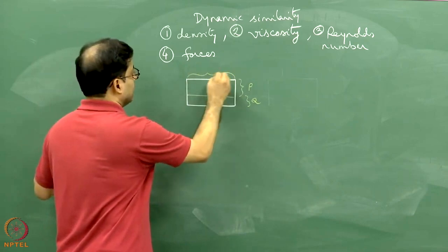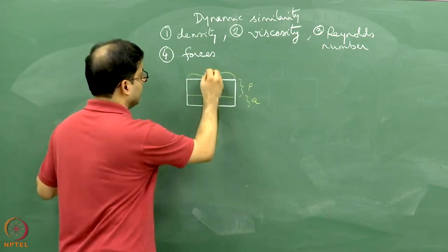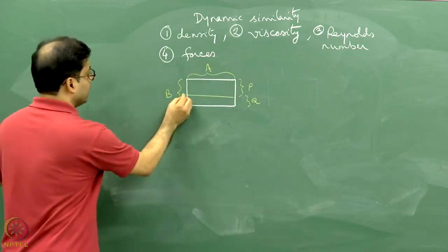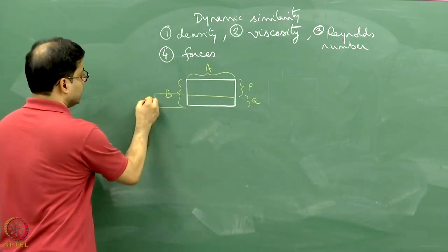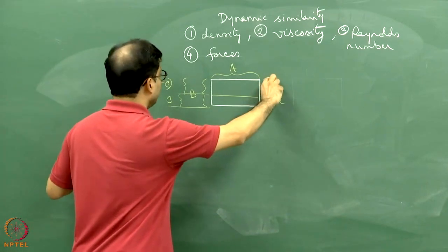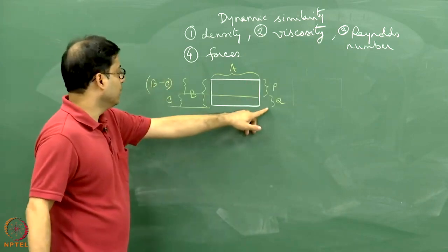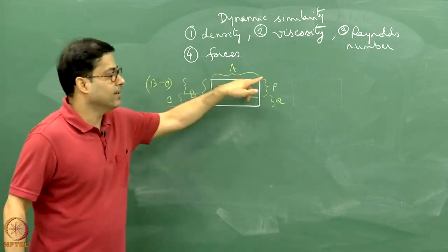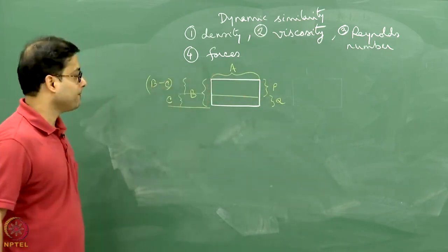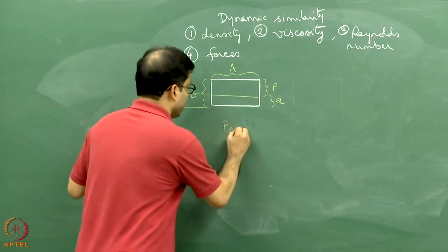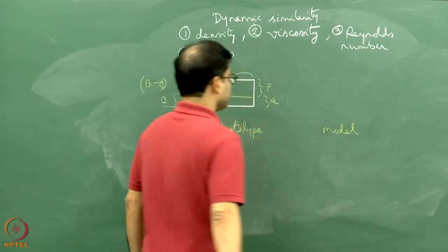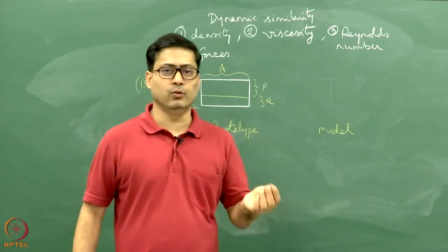There can be two or more layers. Let us say this is my rock type P and this is my rock type Q. And this length is, let us say I write as capital A. Let us say this length is capital B. Further, I write down this length is capital C. So for the rock P, the thickness is B minus C. For rock Q, the thickness is C, and the length is A. So this is our prototype. And let us look at the model.